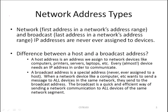Within the address range of any IPv4 network we have two special addresses: the network address and the broadcast address. The network is always the first address and broadcast is always the last address, and these addresses are never ever assigned to devices.